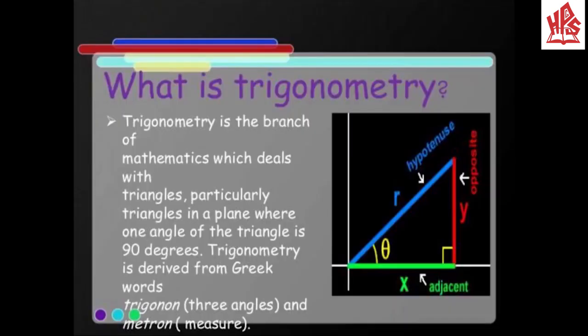What is trigonometry? Trigonometry is the branch of mathematics which deals with triangles, particularly triangles in a plane where one angle of the triangle is 90 degrees. Trigonometry is derived from Greek words: 'trigonon', which means three angles, and 'metron', which means measure. A triangle which has a 90-degree angle is called a right angle triangle.